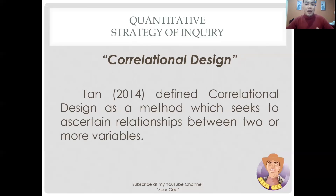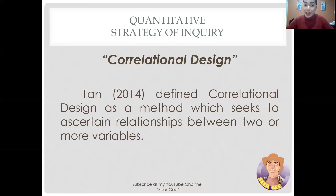Now let us move to correlational design. Tan (2014) defined correlational design as a method which seeks to ascertain relationships between two or more variables. Simply put, it examines whether an increase or decrease in one variable corresponds to an increase or decrease in another variable. Researchers use correlational statistical tests to describe and measure the degree of association or relationship between two or more variables or sets of scores.